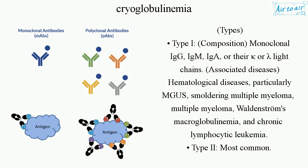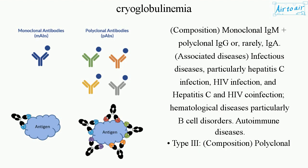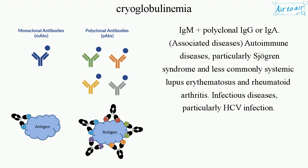Type II — most common. Composition: monoclonal IgM plus polyclonal IgG, or rarely IgA. Associated diseases: infectious diseases, particularly hepatitis C infection, HIV infection, and hepatitis C and HIV co-infection; hematological diseases, particularly B cell disorders; and autoimmune diseases. Type III — Composition: polyclonal IgM plus polyclonal IgG or IgA. Associated diseases: autoimmune diseases, particularly Sjögren's syndrome, and less commonly systemic lupus erythematosus and rheumatoid arthritis; infectious diseases, particularly HCV infection.